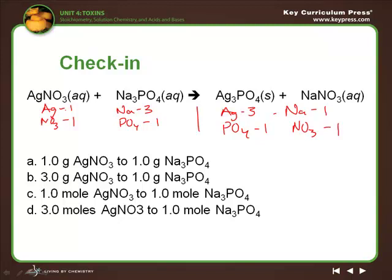So if I look very quickly I see my Ag's are not equal, so I'm going to put a three in front of this Ag. That makes it three of these and three nitrates.